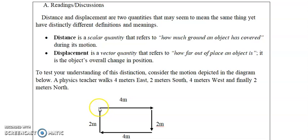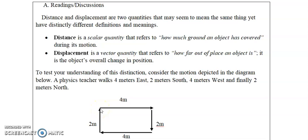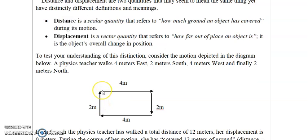It is the object's overall change in position. To understand this further, let's look at this example. The physics teacher starts at a starting point and walks four meters east, then two meters south, then four meters west, and finally two meters north — basically returning to her starting point. To solve for distance, you simply add all the magnitudes.